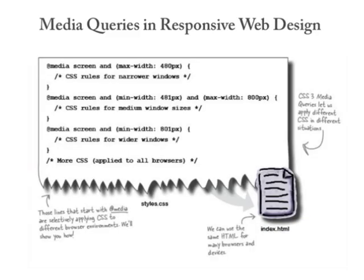It is common to combine a number of media queries together to create a fully adaptive layout. The first media query has CSS rules for narrower screens, 480 pixels or narrower. The second contains rules for window widths between 400 and 800 pixels inclusive — you can combine more than one criterion using the AND keyword. A third applies CSS for window widths 801 pixels or wider. When a media query represents a significant shift in layout, that point is often called a breakpoint.